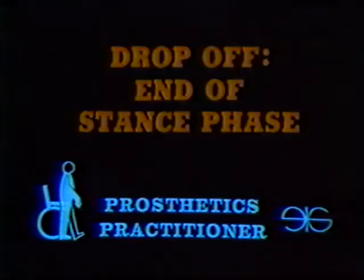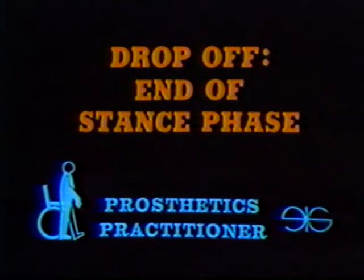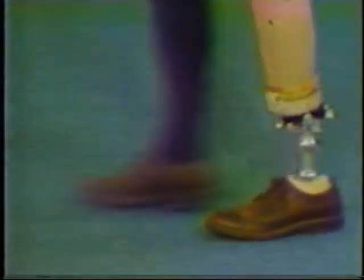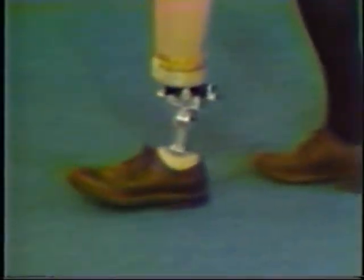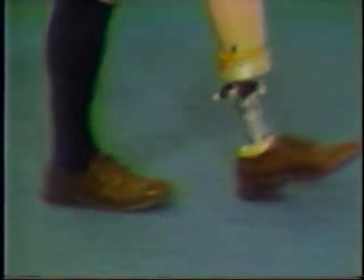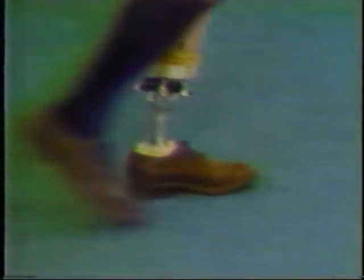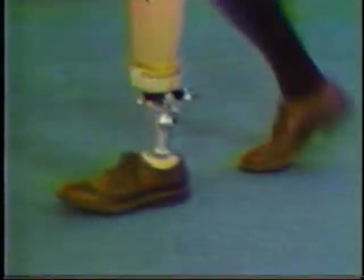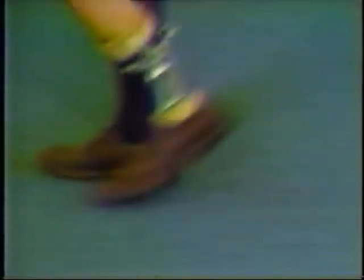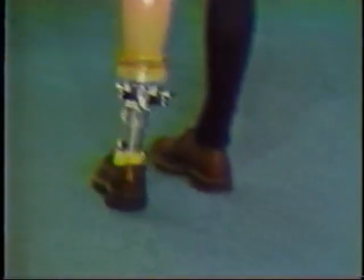Another deviation observable from the side is drop-off in the last part of stance phase. The amputee may feel like they are falling in a hole. Notice how the knee falls rapidly forward as the amputee walks. This deviation can be caused by having the foot too far posterior or too dorsiflexed. Too short a heel on the SACH foot will also cause this deviation.